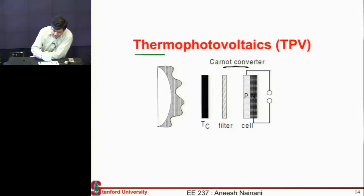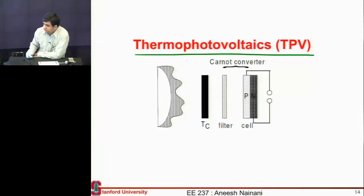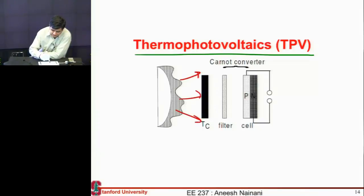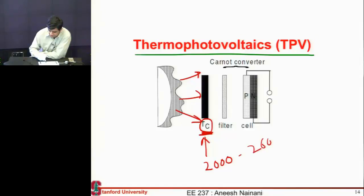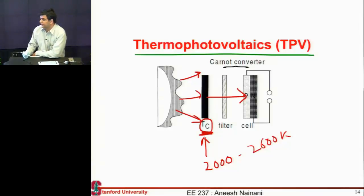The next thing I want to talk about is thermophotovoltaics, which I mentioned in the very first week. Remember, we talked about having an absorber or converter in between the sun and the cell. It heats up to a temperature in the range of 2000 to 2500 Kelvin, and then you use this to convert it to electricity. Instead of directly converting from the sun, you get much better efficiency using this intermediate converter.